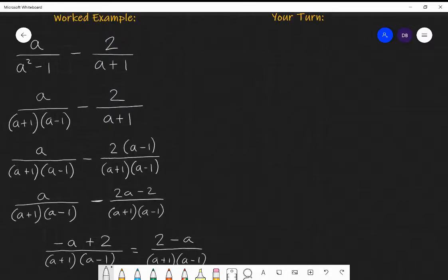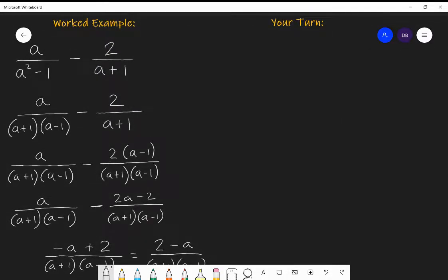Now, I'm going to give you a question to do. So I'm going to write down a question. I want you then to pause the video, have a go yourself on a piece of paper, and then I will give the answer. What I want you to do is simplify P over P squared minus nine, subtract two over P plus three.